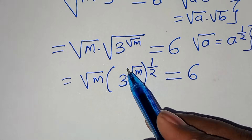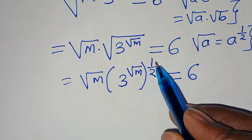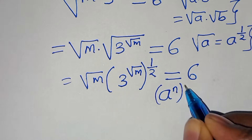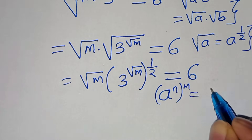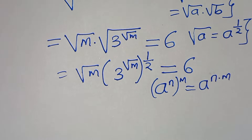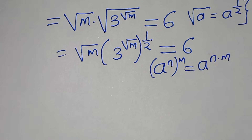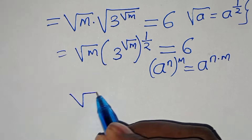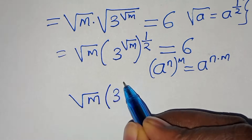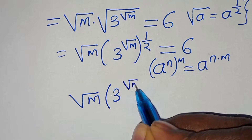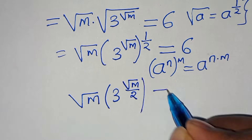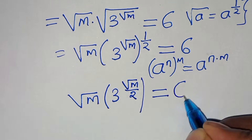Now 3 to the power of square root of m raised to the power of a half is in the form of a to the power of n raised to the power of m, which we can express as a raised to the power of n multiplied by m. So this implies that we have square root of m times 3 raised to the power of square root of m over 2, and this equals 6.